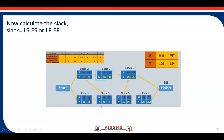Here you can see the slack has been calculated for all activities. The next step is to identify the critical path. To identify the critical path, find all activities with slack equal to zero — if the slack is 0, that activity is on the critical path. Starting from the start node: B has slack 0, D has slack 0, E has slack 0, and F has slack 0. So the path is start → B → D → E → F → finish.